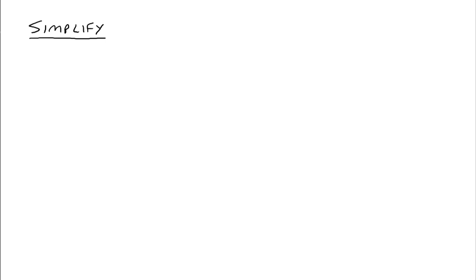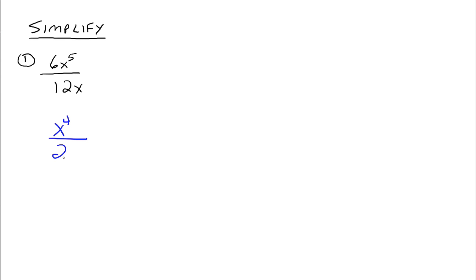Now I'd like to talk about simplifying rational expressions. Here's our first example. This is a rational expression of a monomial divided by a monomial — we've already solved these with properties of exponents. You've got 6 over 12, x to the 5th over x, so that would be x to the 4th on top. 6 and 12 reduce to one half, so you have x to the 4th over 2. That's a refresher of stuff we've done before.